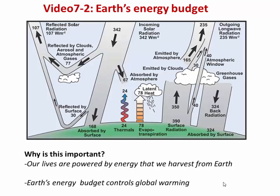Hi guys, welcome to the second video in class 7. In the first video we looked at some specific ways that energy can be transferred including radiation, and we talked a little bit about the greenhouse effect. In this video I want to build on that and look more broadly at Earth's energy budget and how energy moves around between different parts of the system.